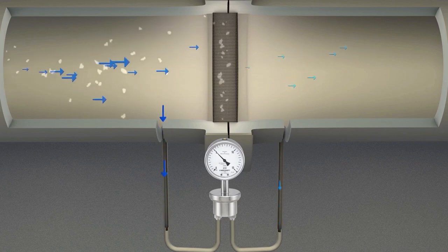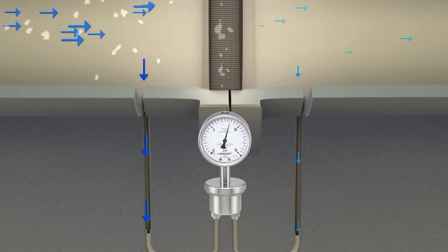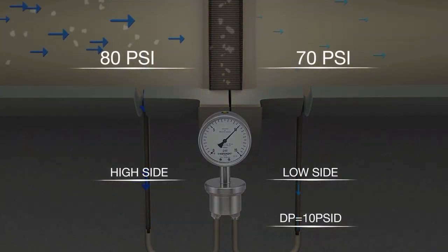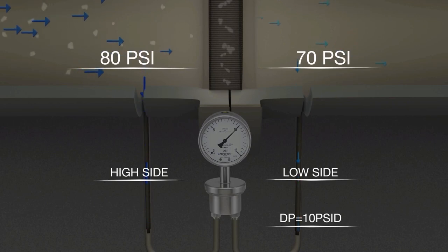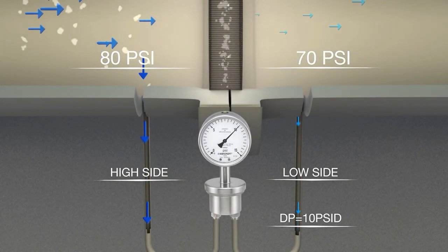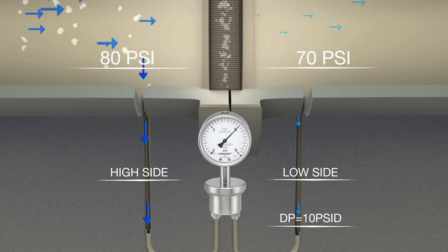Differential pressure is measured by placing taps both before and after the filter. A differential pressure measuring instrument can be connected to detect the high side and low side pressures. The instrument will report the difference between the two sides. The saturation point will be indicated when the delta P value reaches a predetermined threshold.